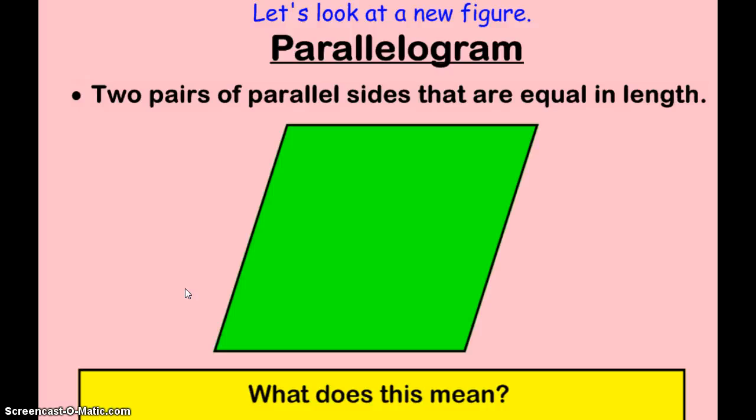The next shape is a parallelogram. A parallelogram has two pairs of parallel sides that are equal in length. What makes a parallelogram different than a rectangle is it does not have that rule of having 4 right angles.